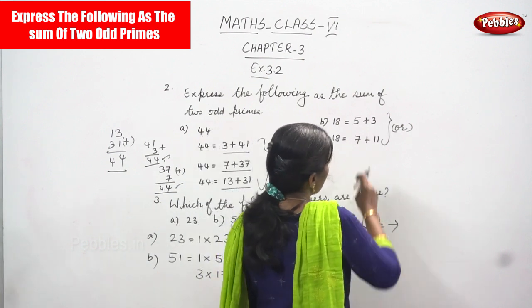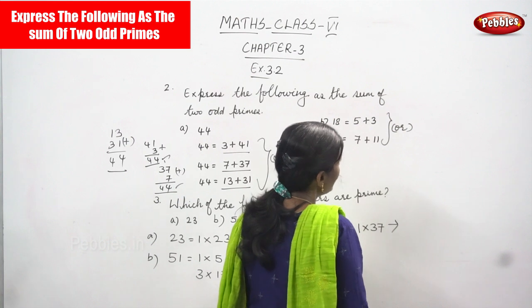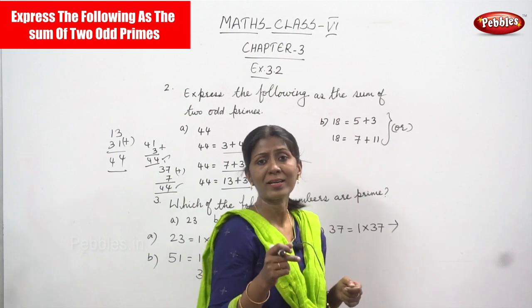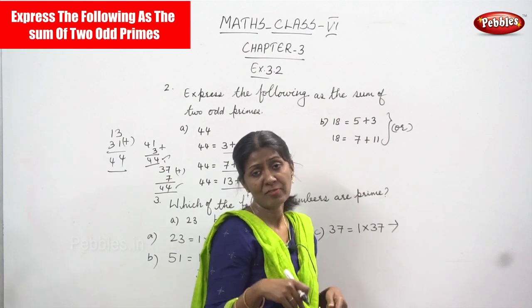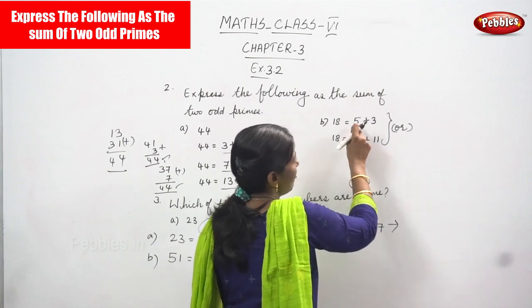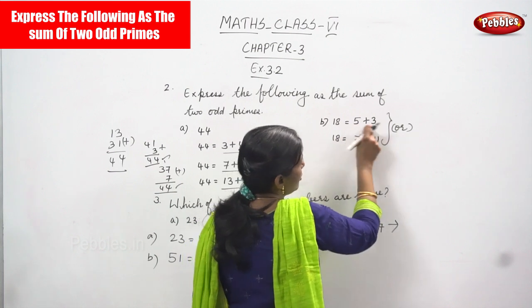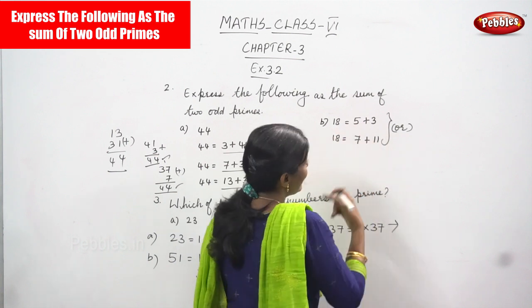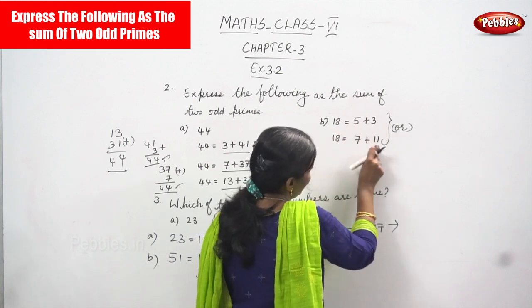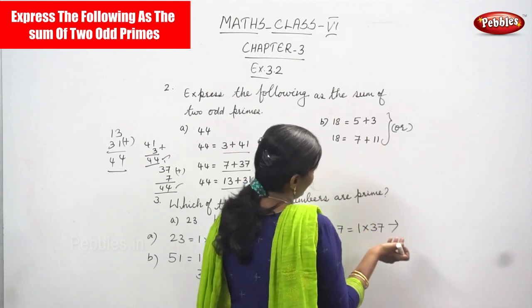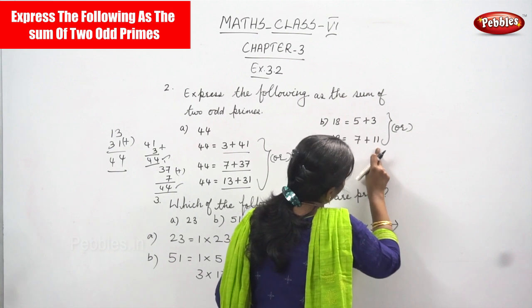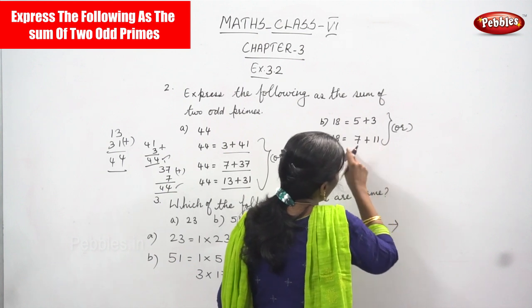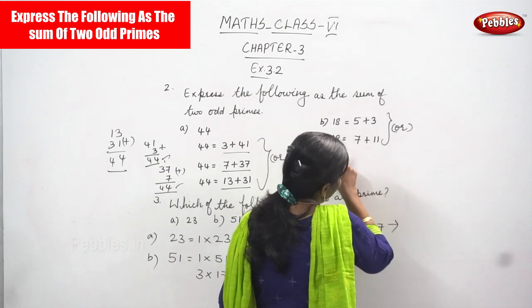Next, 18 is given. So 5 is an odd prime number and 13 is an odd prime number. A prime number has only two factors — divisible by 1 and itself. So 5 is divisible by 5 and 1, and 13 is divisible by 1 and 13. Adding these two odd primes gives 18. Next, 7 is an odd prime number and 11 is also an odd prime number.